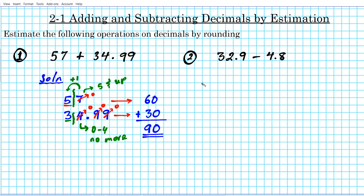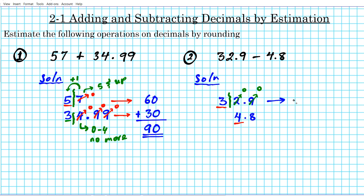By rounding, how do we estimate the difference in this case? So what we're going to do is line up the two numbers: 32.9 and 4.8. We're going to round both of them to the highest place value for each number. For 32.9, we're going to be rounding to the tens place — the three. For 4.8, we're rounding to the ones place — the four. So put up our partition and look at the number on the back. This is zero to four — no more. So just set everything else to zero. Our estimation: if we round 32.9 to the tens place, it's going to be 30.